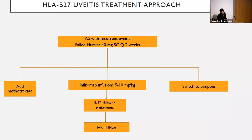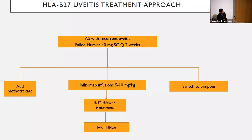For HLA-B27 uveitis non-responders, options are limited. If patients fail Humira 40 mg every two weeks, infliximab or secukinumab can be pursued, as the data on IL-17 is still inconclusive. If patient has well-controlled AS and predominantly uveitis management is needed, adding methotrexate or mycophenolate has shown efficacy to control uveitis. If they fail another anti-TNF agent, switching to an IL-17 inhibitor is bound; the recommendation is to combine with methotrexate to improve outcomes. JAK inhibitors are now also approved for HLA-B27 spondyloarthritis.